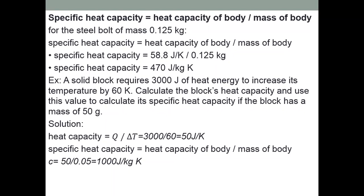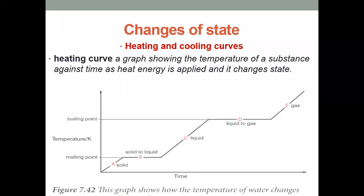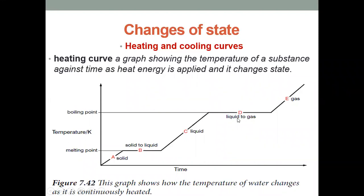Now let's discuss changes of state using a heating curve. When you heat a solid object, it will change state from solid to liquid at point B on the graph. Continuing to heat, the liquid changes to gas. When heating continues beyond that, the gas state continues and the liquid evaporates. This is how change of state occurs when heating an object.